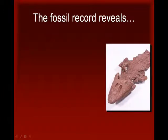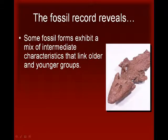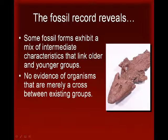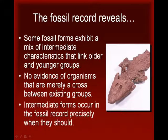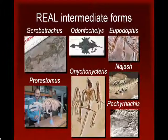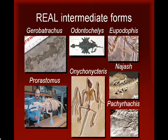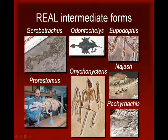So, what have we learned? Hopefully you can now understand why scientists do not take seriously the claim that there are no intermediate forms in the fossil record. An honest look at the fossil record consistently confirms several predictions based on evolutionary theory. First, we find that some fossil forms exhibit a mix of intermediate characteristics that link an older group of organisms to a younger group. Second, contrary to the popular misconception, we do not find fossil evidence of organisms that are merely a cross between existing groups — such a find would actually contradict evolutionary theory. Finally, when we find authentic intermediate forms, they occur in the fossil record precisely when and where they should. In my next video I will present several examples of fossil intermediate forms that were predicted to exist before they were actually discovered, thus demonstrating the usefulness of evolutionary theory for making sense out of biological observations.